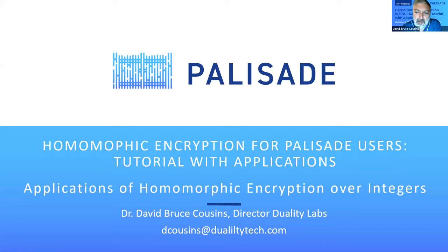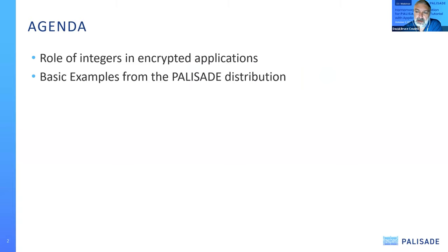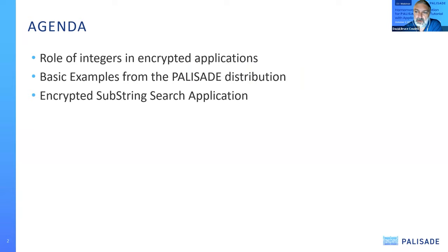The next part of this webinar is going to discuss applications of homomorphic encryption over the integers. We're going to touch on a couple of example programs in the Palisade distribution, and then dive into a more detailed example of doing a secure substring search using integers. We'll talk about the role of integers in encrypted applications, go over the list of basic examples, and then dive into the more detailed application.